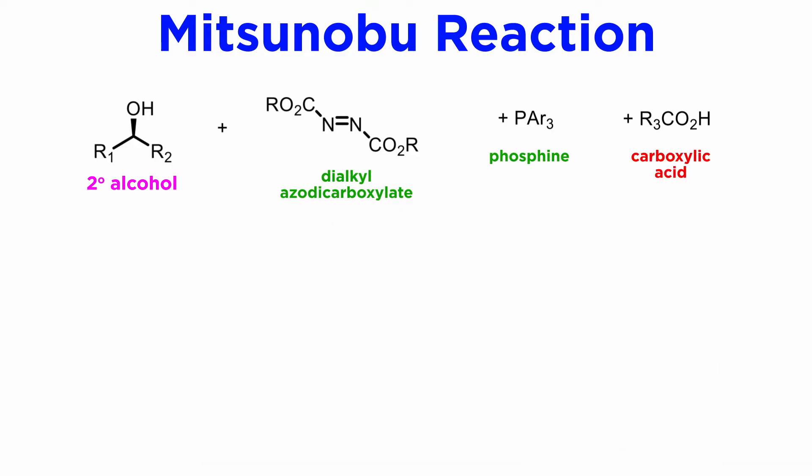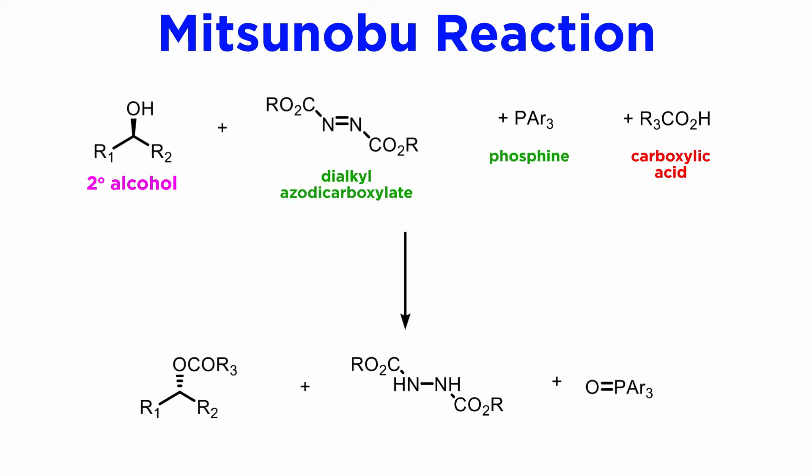The nucleophile is a carboxylic acid, often acetic acid. The products of the reaction are the ester corresponding to the inverted alcohol, the phosphine oxide, and the reduced azo compound, which is a dialkyl-1,2-hydrazine dicarboxylate. The reaction is carried out in an aprotic solvent, usually an ether like THF.